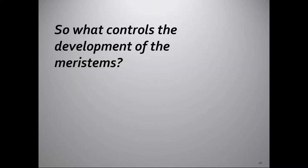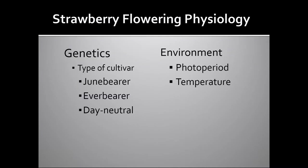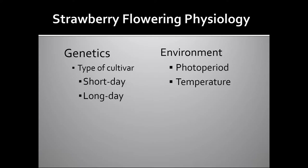So what controls the development of these meristems? Genetics and environment. The environmental cues include photoperiod and temperature. Genetics are what type of cultivar we're looking at. Classically, we've looked at Junebearer, Everbearing, and day-neutral cultivars. However, I think there's enough evidence in the literature that we should stop looking at our strawberry cultivars in these categories, but rather we should look at short-day and long-day cultivars.